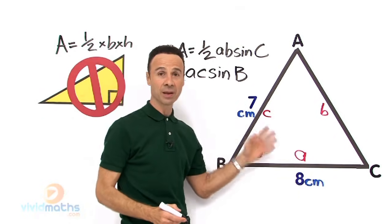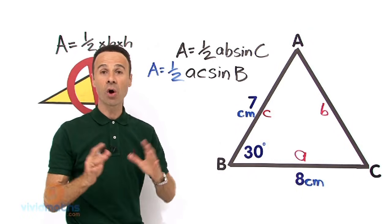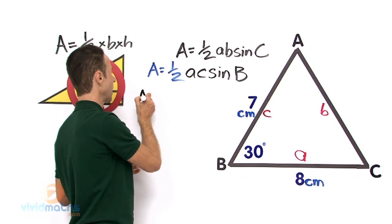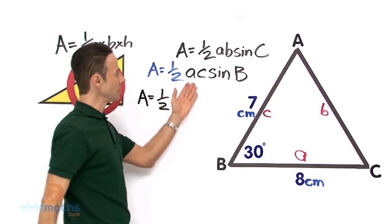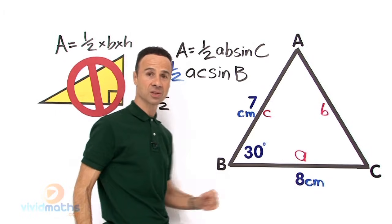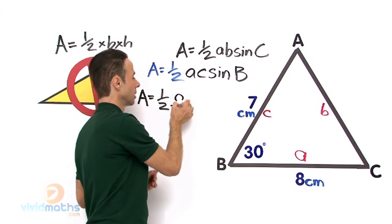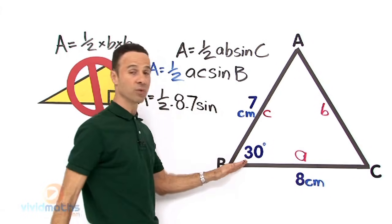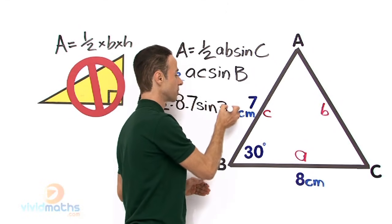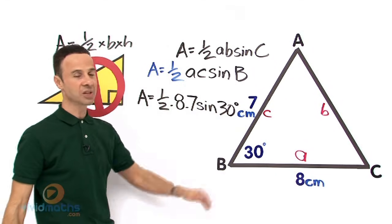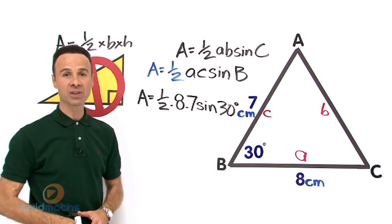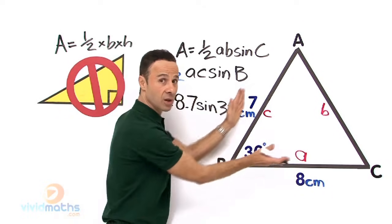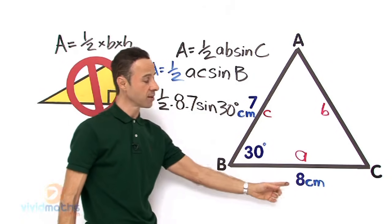So let us take the values and substitute them in to work out the whole area of triangle ABC. The area equals one half times AC — here is little a: 8 centimeters — times little c: 7 — and then we finish off with sine of the angle we are given, which is 30 degrees. There is our formula all substituted in. The angle goes in there, and the two sides right between it are the 8 and the 7.